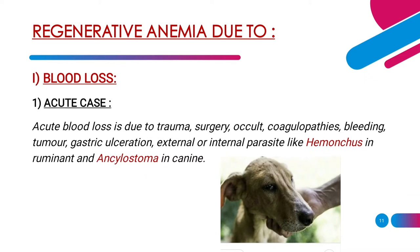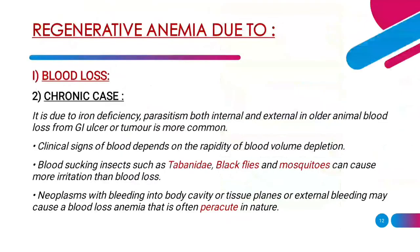Regenerative anemia due to blood loss can be either acute or chronic. Acute blood loss is due to trauma, surgery, occult coagulopathies, bleeding, tumor, gastric ulceration, or external/internal parasite infestation like Haemonchus in ruminants and Ancylostoma in canines. Chronic blood loss can be due to iron deficiency and parasitism both internal and external. In older animals, blood loss from gastrointestinal ulcer or tumor is more common. Neoplasms with bleeding into body cavities may cause blood loss anemia that is often peracute in nature.